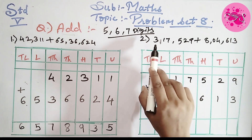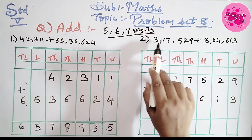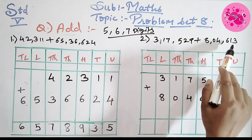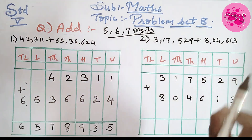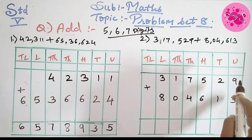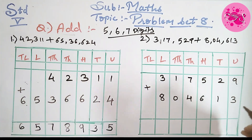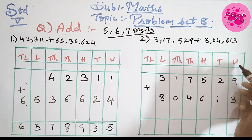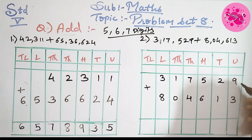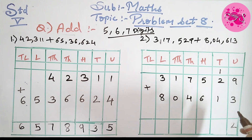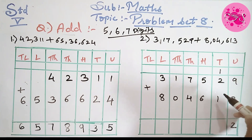Second one. Numbers are 3,17,529 plus 8,04,613. Here also we have to draw the box and make the columns — unit, 10s, 100s, 1000s, 10,000s, lakhs. Now we have to start from the right side, that is from the unit place.